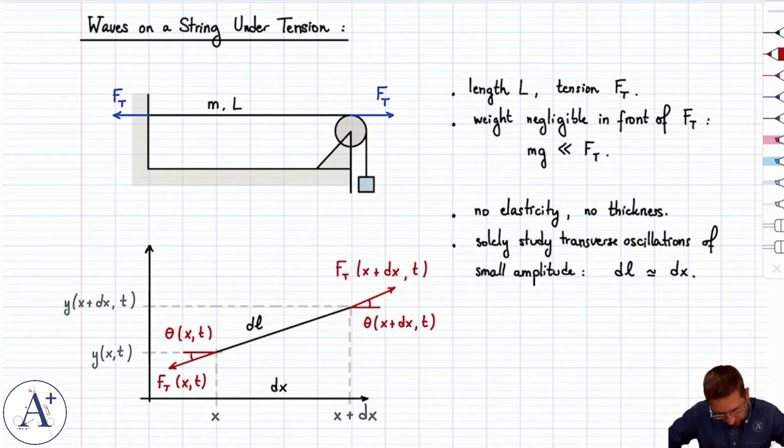This would be theta of x and t. Here it's theta of x plus dx and t. It seems tedious, but it's actually going to be helpful in the derivation, so bear with me. There is no weight force because it's negligible in front of tension, but we should define a few quantities or at least do a little bit of prep work just to make the derivation go a little faster and not get sidetracked during the derivation.